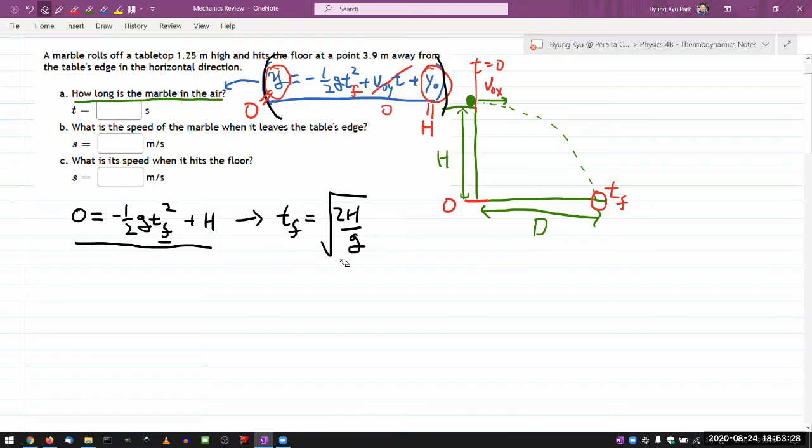Yeah, so you plug in the numbers and that will give you the answer there. Let me keep working through. So it asks what is the speed of the marble when it leaves the tables edge. So I labeled it here. But I guess reading the question more carefully, I realized oh, I was never told what this is. So that's a label of an unknown. So I need some additional information to figure this out.